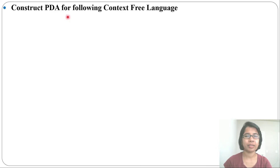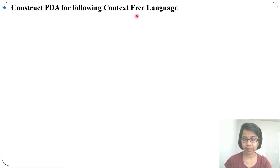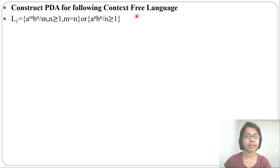Let's construct a PDA for the following context-free language. In the previous lecture I designed a PDA for regular language; now let's design a PDA for context-free language. The first language is a^m b^n where m = n, or equivalently a^n b^n with n ≥ 1.